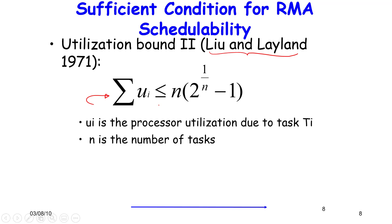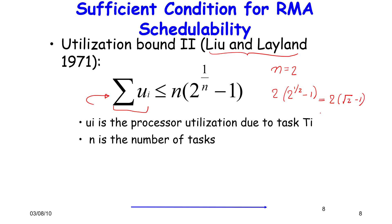We still rely on the sum of the utilization as the metric of choice, as we did in EDF. In this case, it is dependent on the number of tasks. The sum of the utilization should be less than n times 2 raised to the power (1/n) minus 1. Setting n equal to 2, this becomes 2 times (2^(1/2) minus 1), which is 2 times (√2 − 1), which equals 0.82 — the bound for two tasks.